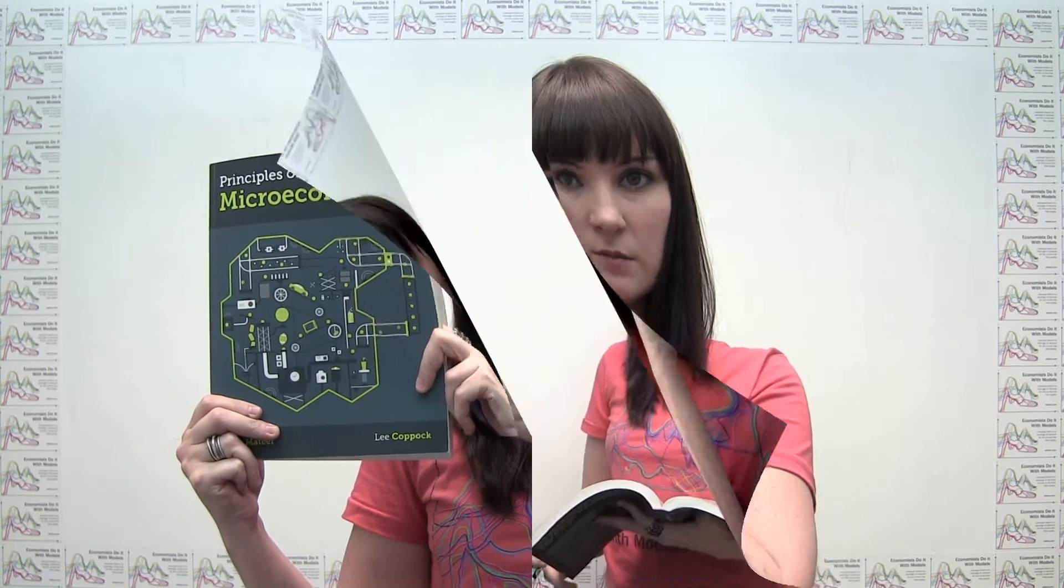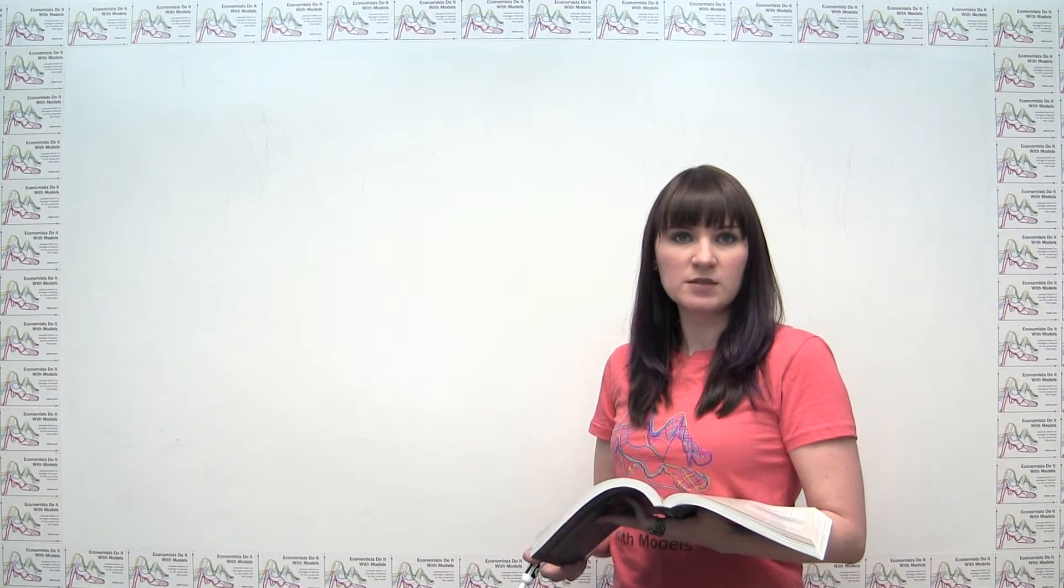Hey, everybody. Today's practice problem comes from Principles of Microeconomics by Dirk Mateer and Lee Coppock. We're going to be doing chapter 9, problem number 10. The problem reads as follows.